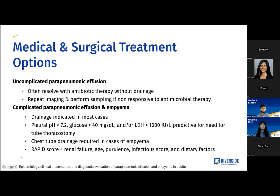For medical and surgical treatment options: for uncomplicated parapneumonic effusions, they often resolve by themselves with antibiotic therapy — no drainage required — and you would repeat imaging and perform sampling if the patient is non-responsive to the therapy. For complicated parapneumonic effusion and empyema, drainage is indicated in most cases. In certain cases, such as if pH is lower than 7.2 or glucose lower than 40 mg/dL, it's predictive for tube thoracostomy. Chest tube drainage is required in cases of empyema, and a RAPID score can be used, which takes into account renal failure, age, purulence, infectious score, and dietary factors to stratify the patient's risk of mortality.